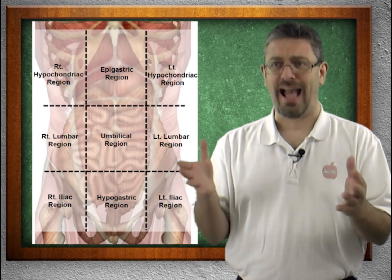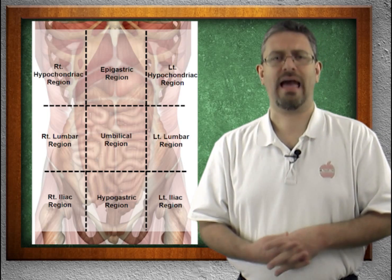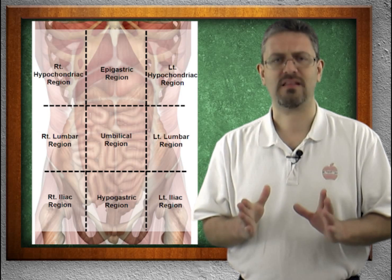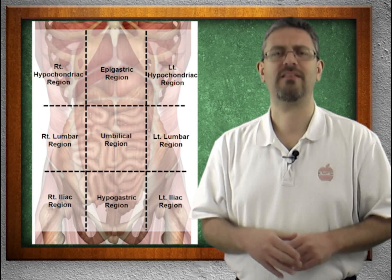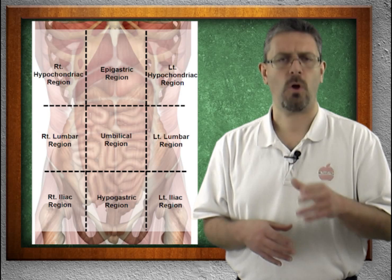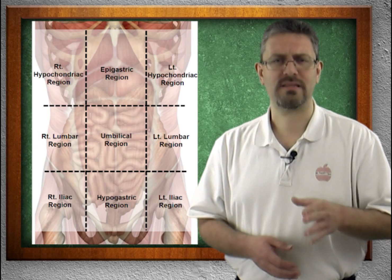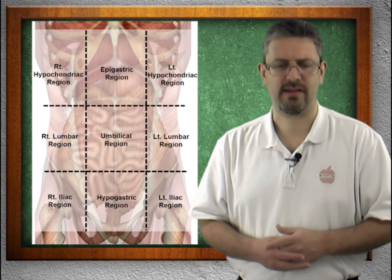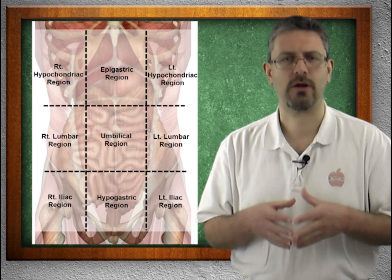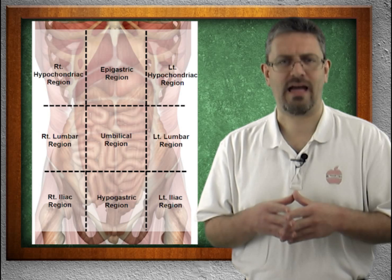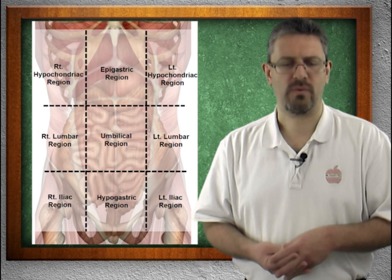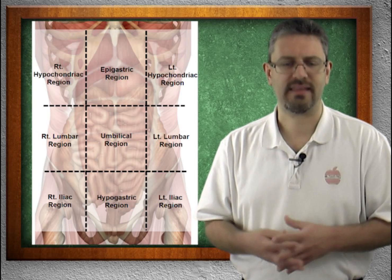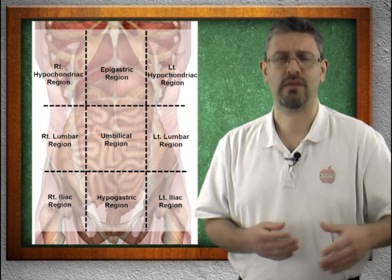Like I said — freak out! But let's break this down. If we have a left, we have to have a right, so that eliminates duplicates. All you have to memorize is one set — either left or right — and you're good. We have a hypochondriac region with a left and right, a lumbar region with a left and right, and an iliac region with a left and right.